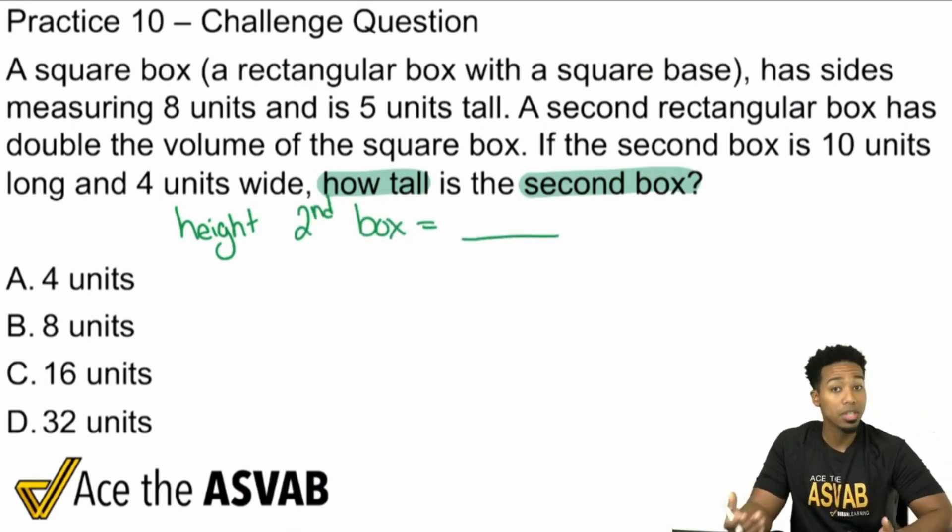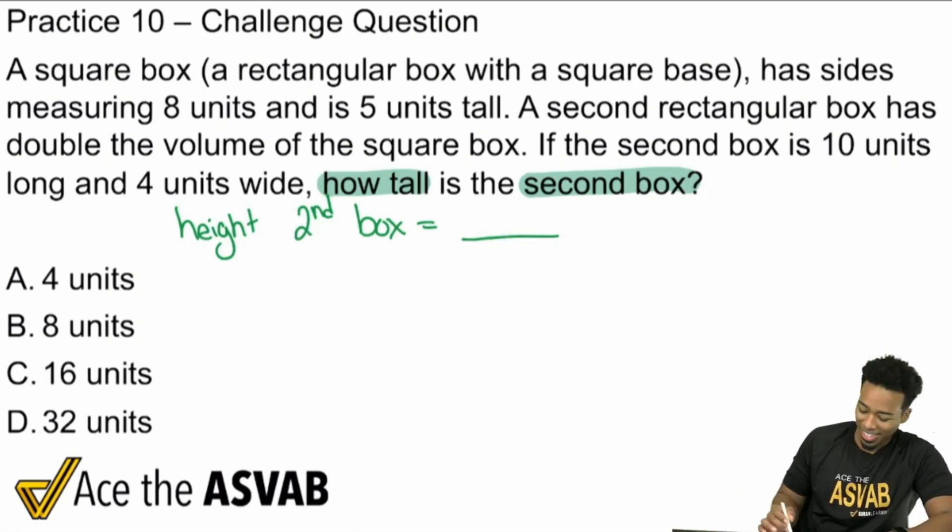Now what we're going to do from here is we're going to go ahead and scan the information and understand what is related to the height of that second box. Because when I see the word box, it's possible that we're talking about a rectangular prism or a prism where it could be talking about the volume, the surface area, maybe the area of one of the sides. I don't know. But it's possible that we could be talking about geometry here, which we are. So with that said, it says if the second box is 10 units long and 4 units wide, how tall is it?